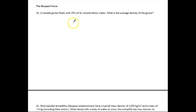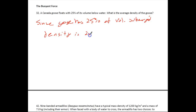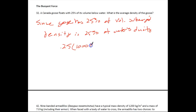The Canada goose floats with 25% of its volume below the water. They want to know what is the average density of the goose. Since the goose has 25% of its volume submerged, we can say the density is 25% of water's density. We just take 0.25 times the density of water, which is about 1,000 kilograms per cubic meter for fresh water, and that gives us 250 kilograms per meter cubed. So that's the average density of the goose.